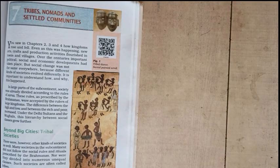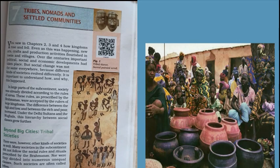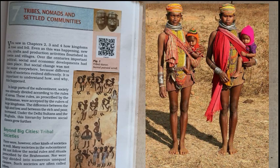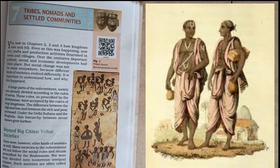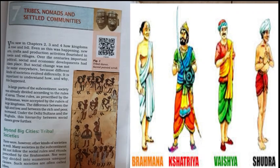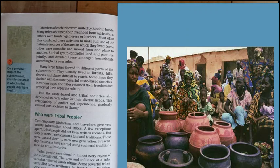Now let us see how life was in the tribal societies beyond the big cities. There were other kinds of societies as well. Many societies in the subcontinent did not follow the social rules and rituals prescribed by the brahmanas, nor were they divided into unequal classes. Such societies were called tribes.